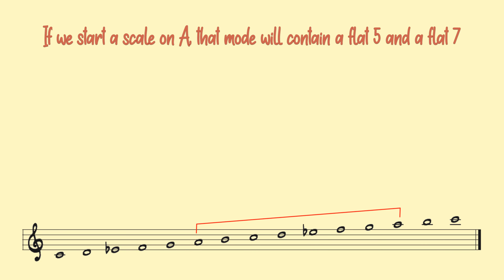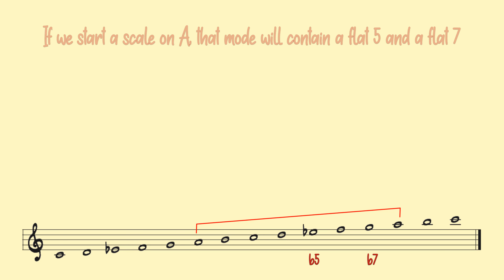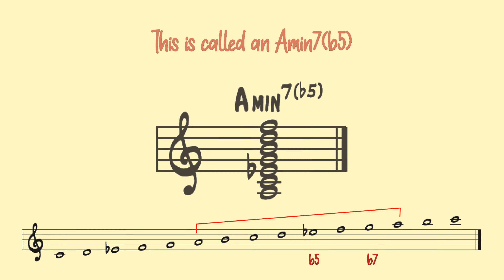If we start a scale on A, that mode will contain a b5 and a b7. This is called an Am7b5.